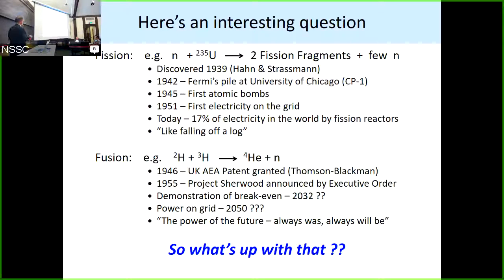Here, 1946, there's a patent, the Thompson-Blackman patent in the United Kingdom, that patented this reaction that even looked better. Fewer objectionable waste products. More energy per nucleon should go like gangbusters. What's the problem? 1955, Project Sherwood announced by Executive Order, President Eisenhower. When are we going to get break-even out of a fusion device, either a plasma magnetic fusion device or a laser-driven fusion? Mystically, well, for ITER, this huge project being built up in France, by the time they're finished, I shudder to think it'll probably be $30 billion. Probably 2032 is the earliest.